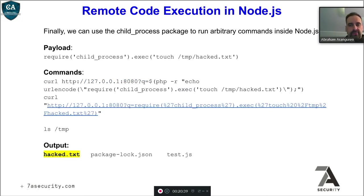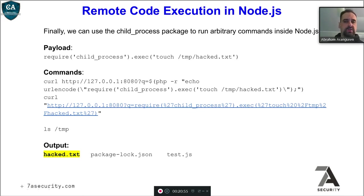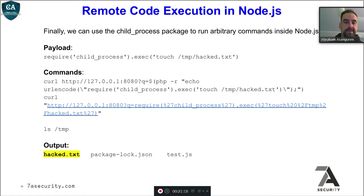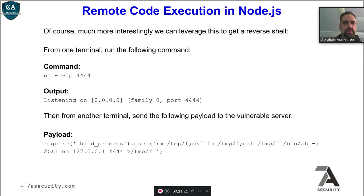We can also create local files by using require('child_process') and then exec('touch /tmp/hack.txt'). We can do that with curl using the URL-encoded trick shown before. If you check the contents of your /tmp directory, you will see hack.txt being saved there. With this we can also get a reverse shell — for this part, we need a netcat listener in one terminal: netcat with flags -nlvp, where n avoids DNS resolution, v is verbose, l is listen, and p specifies the TCP port. We'll listen on port 4444.